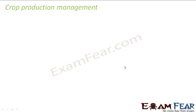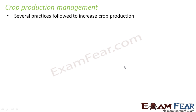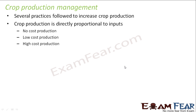In the last topic we saw how to improve the variety of the crop; now we will see how we can improve the production of crops. Several practices are followed to increase crop production, and crop production is directly proportional to the inputs — the kind of input you give determines the kind of output you will get.